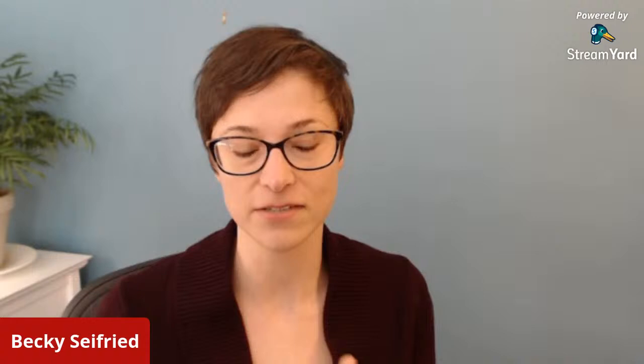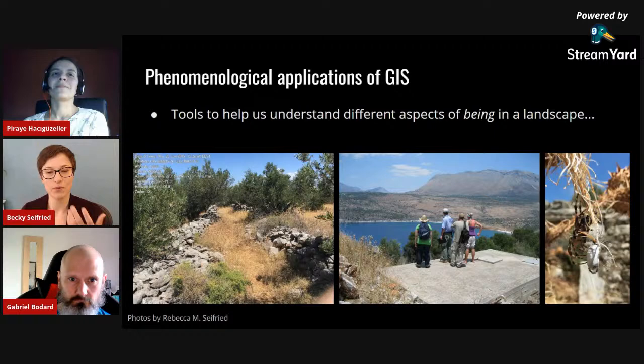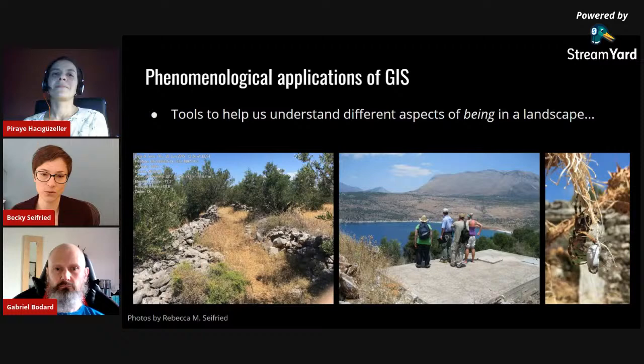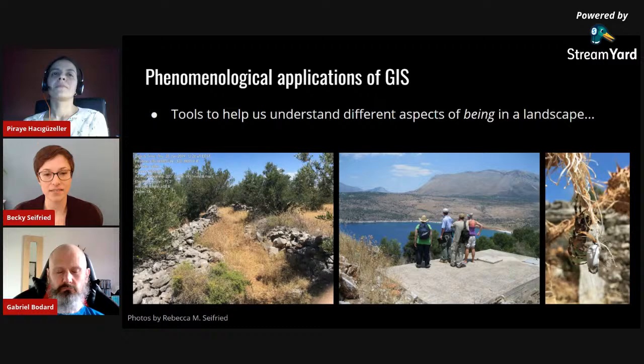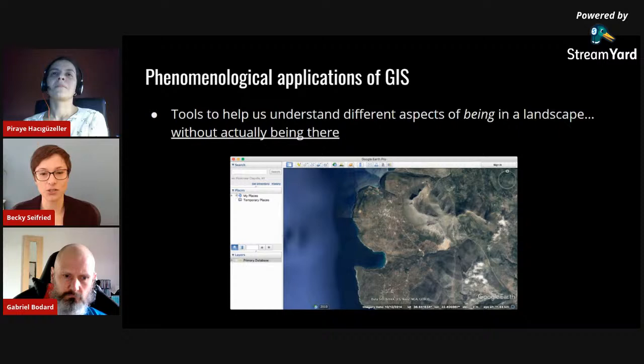That was a really excellent overview and introduction to what GIS is. I'm now going to introduce two different types of analysis: visibility analysis and cost surface analysis. Connecting back to what Piraya was explaining — when do we use vector data versus raster data? For both visibility and movement analysis, we use rasters because we're looking at the landscape, topography, and elevation change to understand how people might see across it and move across it.